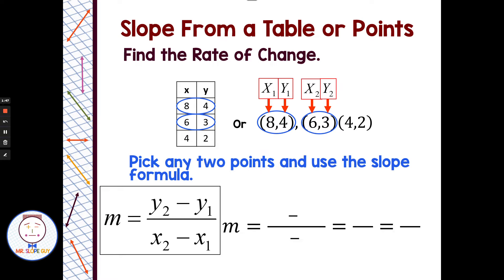Identify my first point as x1, y1 and second point as x2, y2. Then we put those into the slope formula: m equals y2 minus y1 over x2 minus x1. On top we have 3 minus 4, that's y2 minus y1. On the bottom, 6 minus 8. That's negative 1 over negative 2, which equals positive 1 half. So my slope or rate of change is 1 half.